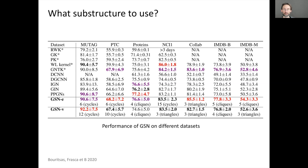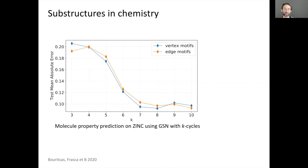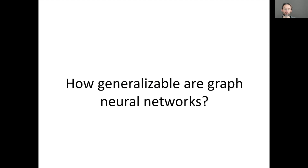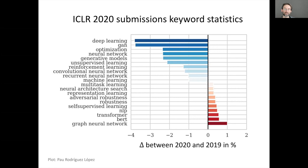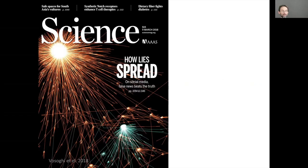Theoretical understanding remains important — both expressive power and generalization of graph neural networks. Ideally, structural encodings could be built from data rather than selected manually. On the application side, graph neural networks have become first-class citizens in machine learning because they address a very broad range of problems.